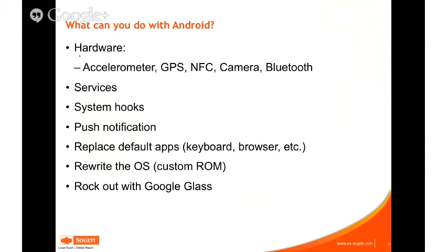If you get into legal gray areas depending on your country, you can actually write your own custom Android-based operating system. Android is an open source platform, so you can get a copy of the Android Open Source Project, write your own kernel, and release it as a custom ROM and flash it onto a phone. And of course we now have Google Glass, which runs a kind of subset of Android — you can write your own Glass apps if you want to, hopefully once they come down in price.